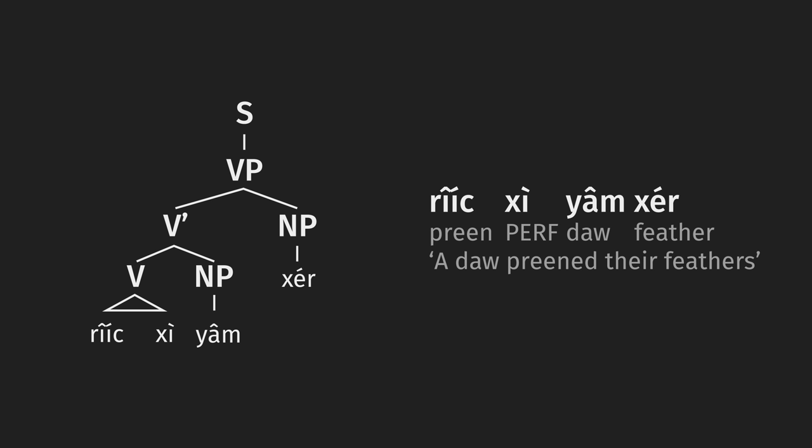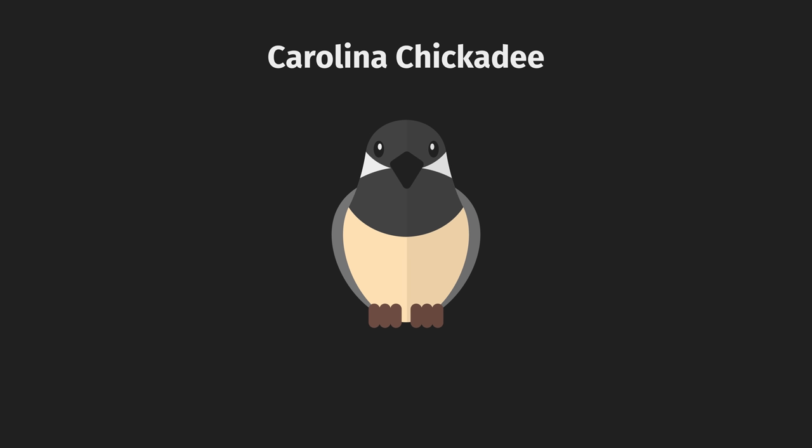In fact, some of the animals that make the most long and fluid sounds are the ones that have been hypothesized to have some sort of grammar of their own, like the Carolina Chickadee. It's thought that the calls of the Carolina Chickadee comprise six distinct note types: A, E, B, C, D, and H, in that order.